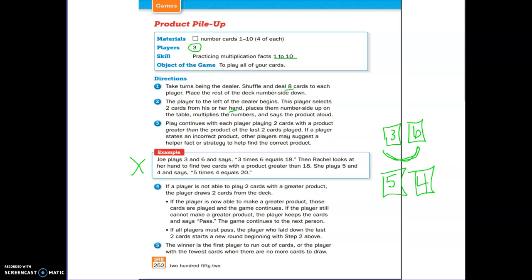Then it's the next person's turn, and that person is going to want to try to find two cards in their hand that when they multiply them they get a product greater than 20. If a player is not able to play two cards with the greater product, the player draws two cards from the deck. If the player is now able to make a greater product, those cards are played. If they still cannot make a greater product, they need to keep their cards and say pass. This is a fun game and it's a great way to practice your multiplication facts.